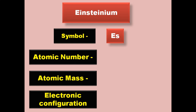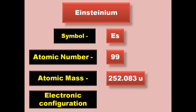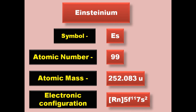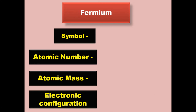Einsteinium has symbol Es, atomic number 99, atomic mass 252.083, electronic configuration [Rn] 5f11 7s2. Einsteinium is an actinide and exists in solid form at room temperature.